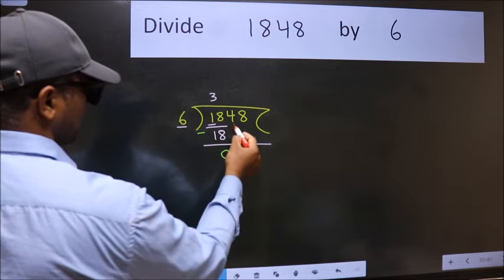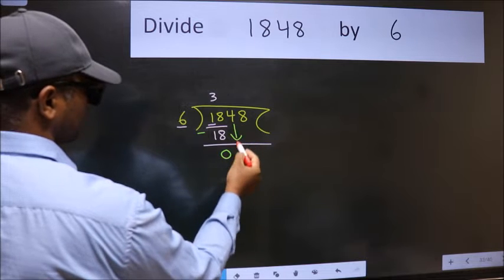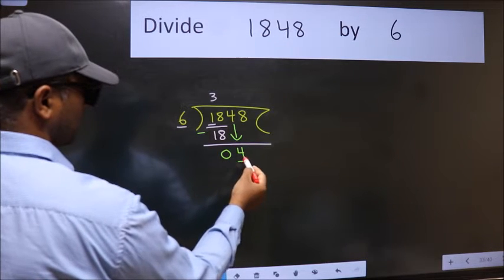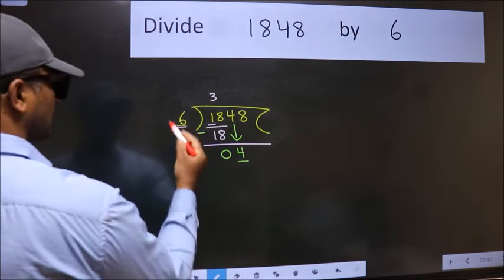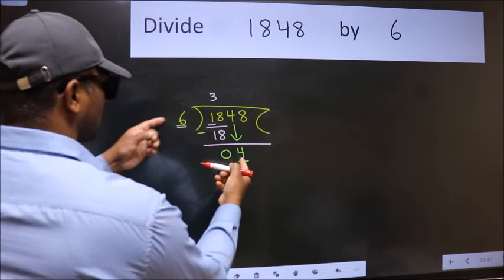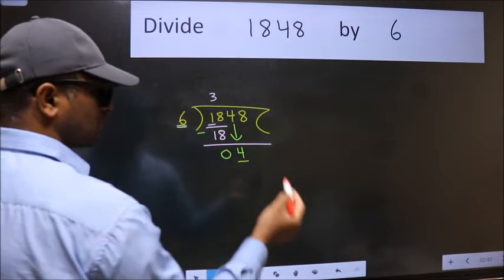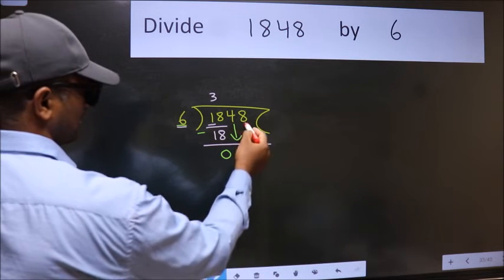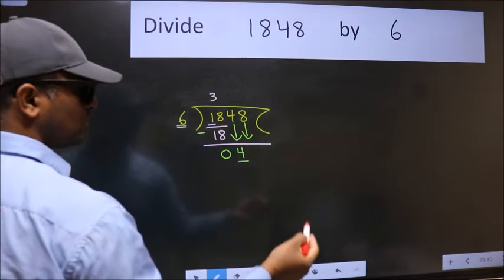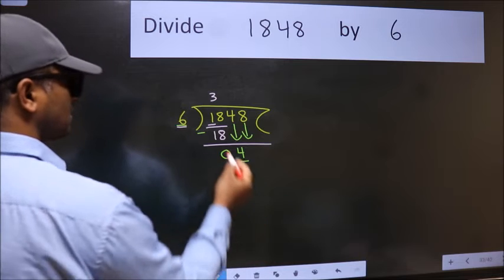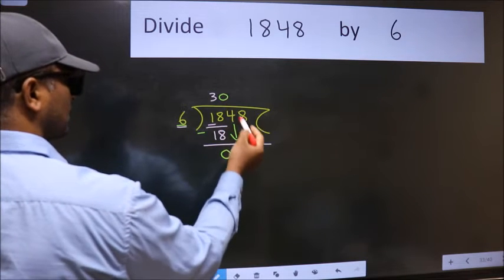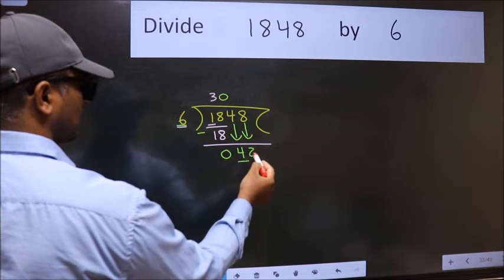After this, bring down the beside number. So 4 down. Now here we have 4 and here 6. 4 is smaller than 6, so we should bring down the second number. And the rule to bring down the second number is put 0 here. Then only we can bring this number down.